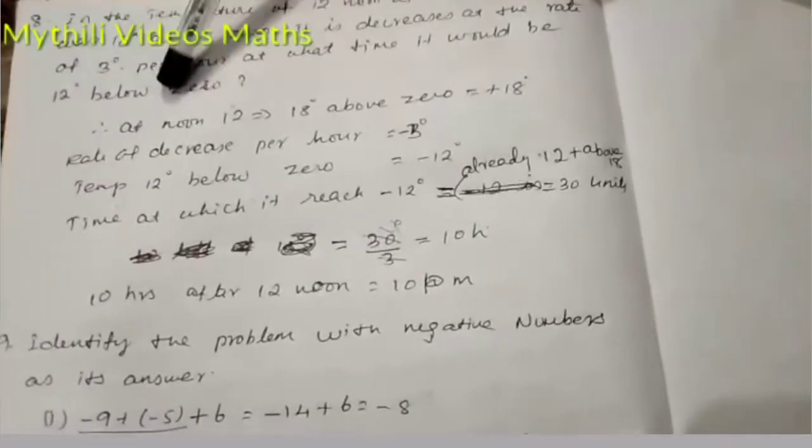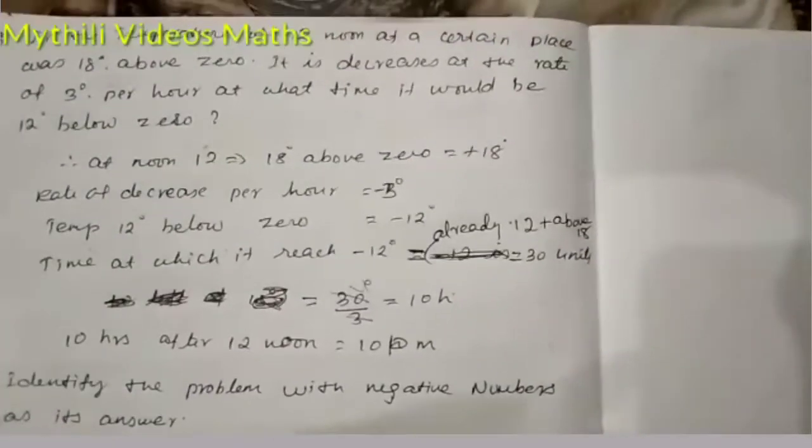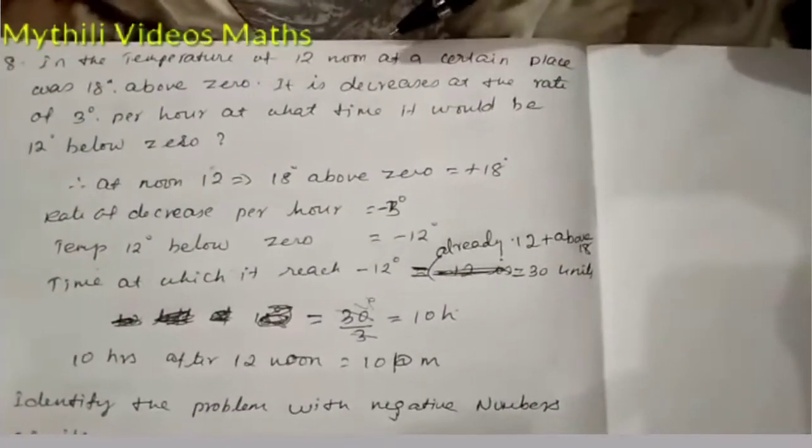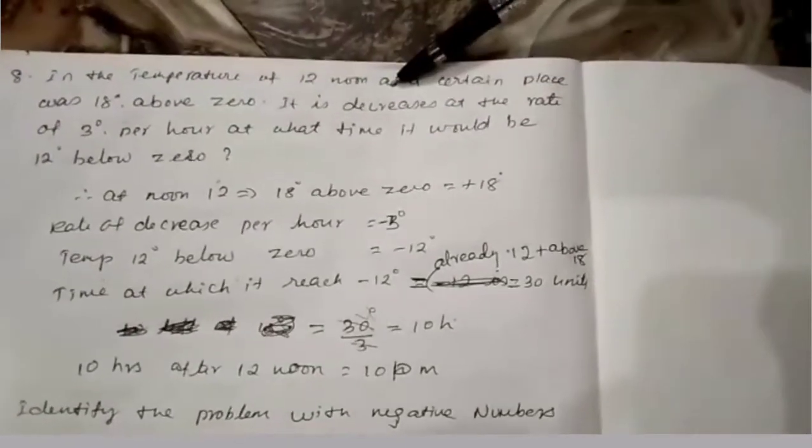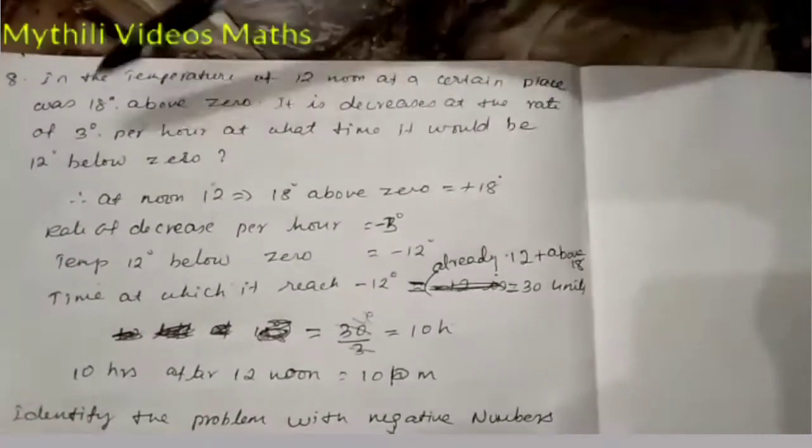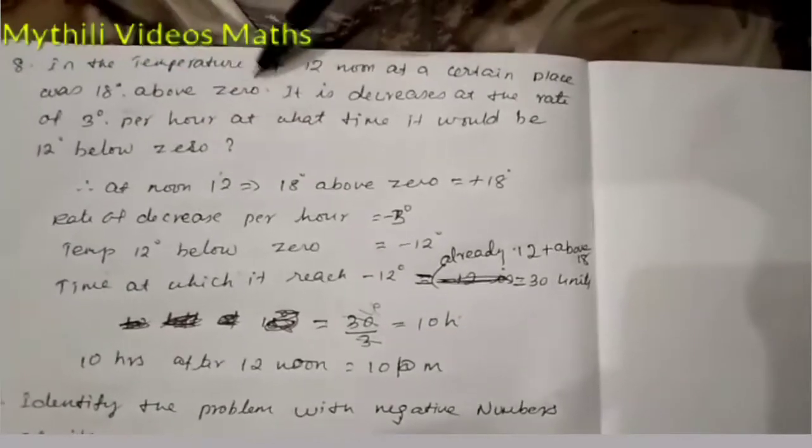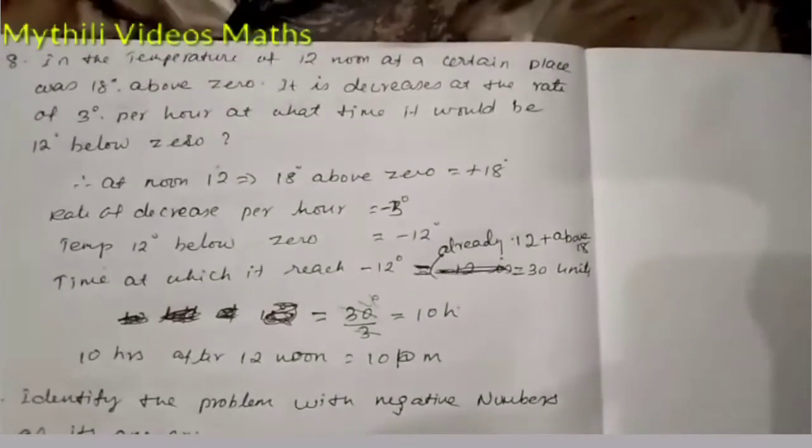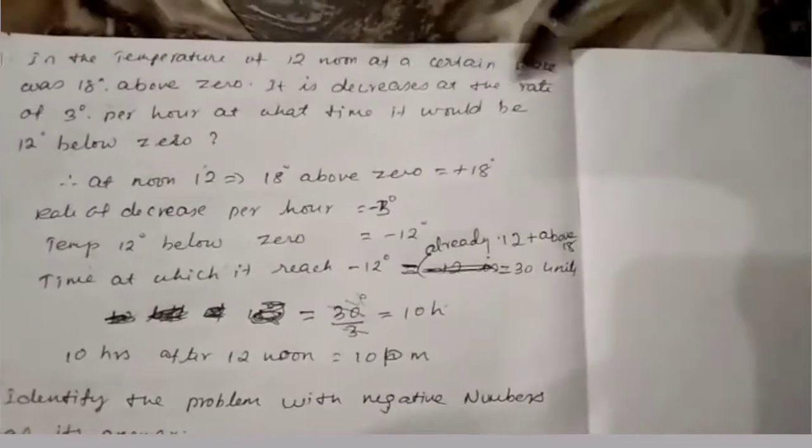be 12 degrees below zero? In this problem, what is given: at 12 noon at a certain place, 18 degrees is above zero. The temperature decreases at the rate